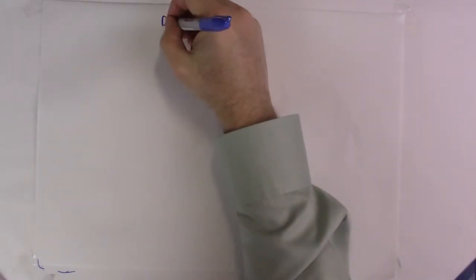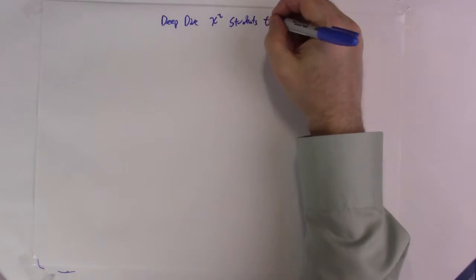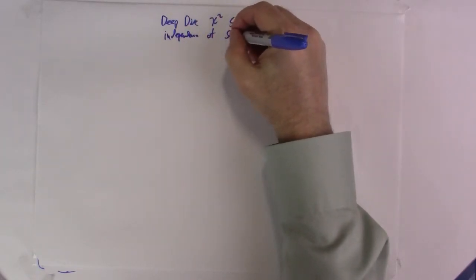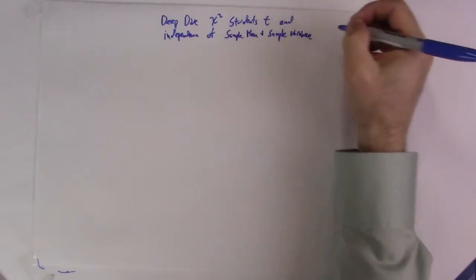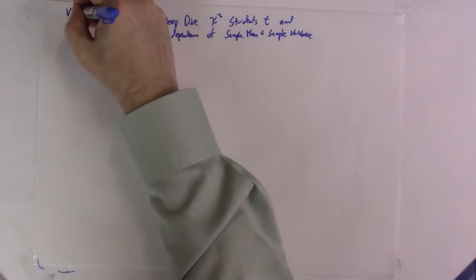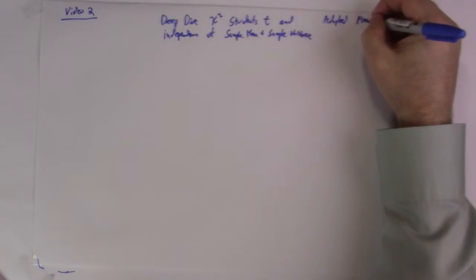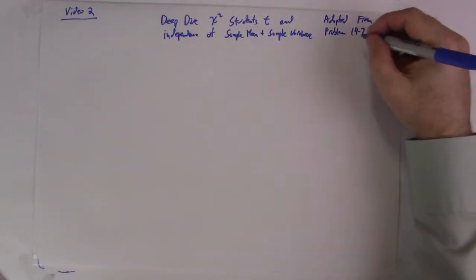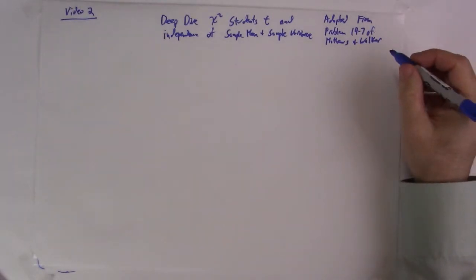Hi, I'm Mark Weissman, and welcome back to this deep dive on chi-squared, Student's t, and independence of sample mean and sample variance. As I mentioned in the previous videos, this is video 2, adapted from problem 14-7 of Matthews and Walker, their book on the mathematical methods of physics.